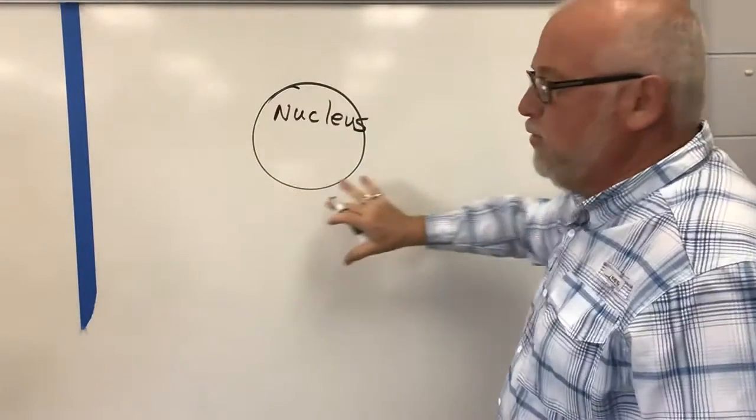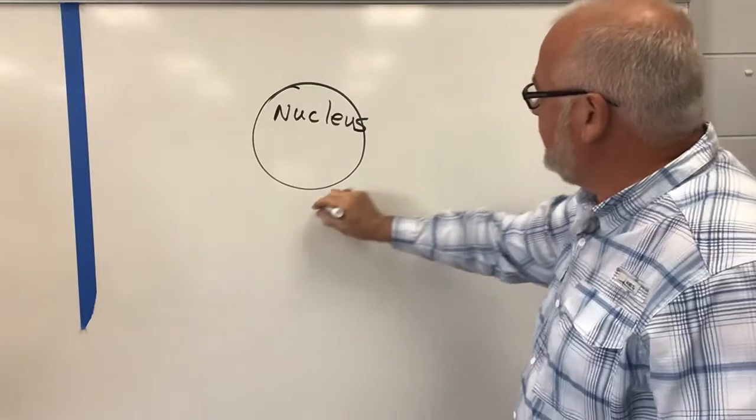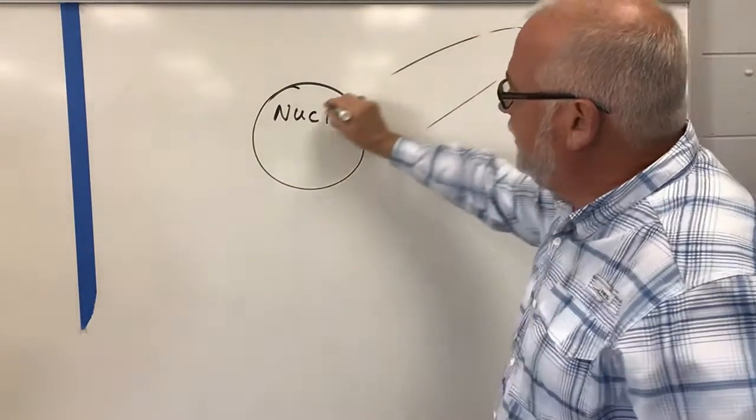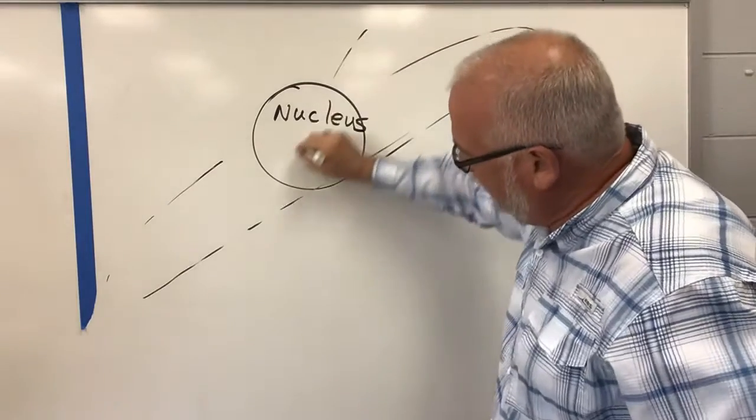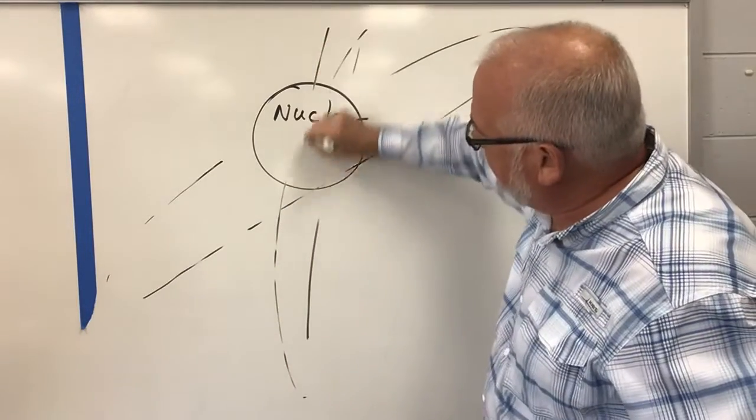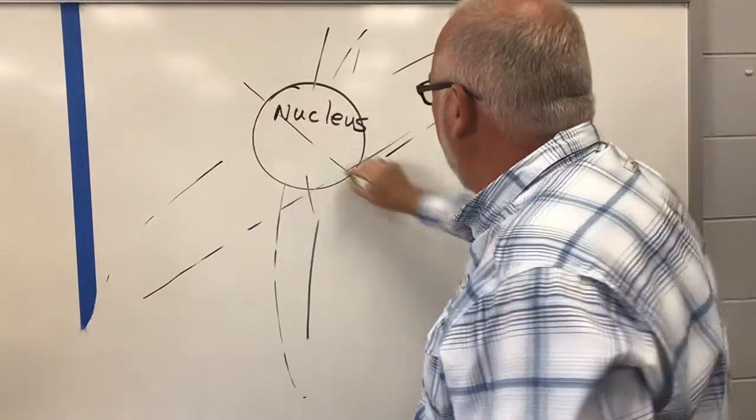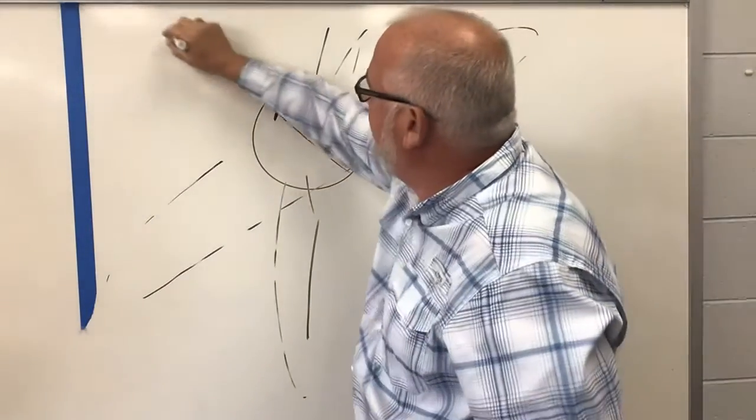So I can't really draw this to scale, but those electrons spinning around, like planets going around the sun in all kinds of directions, crossing in front of the nucleus, going behind the nucleus.